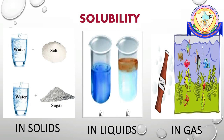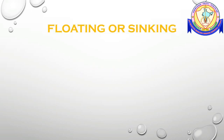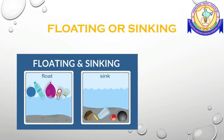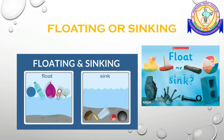Aquatic animals and plants use oxygen dissolved in water to live. The next property is floating or sinking. When you place wood, a plastic bottle, or a balloon on water, they float, whereas stones, metal pieces, and bricks sink. Objects which are lighter than water float on water, while objects which are heavier or denser than water sink in water.